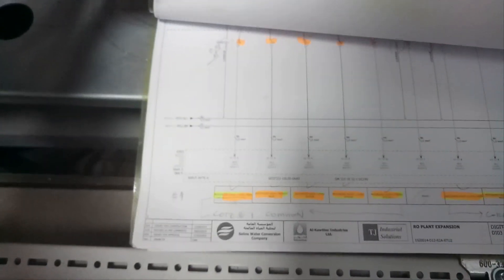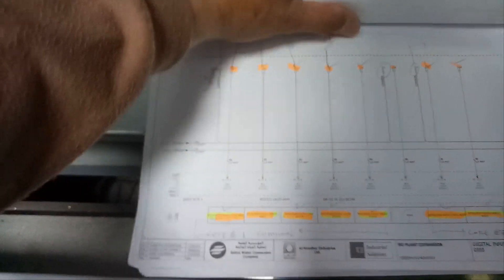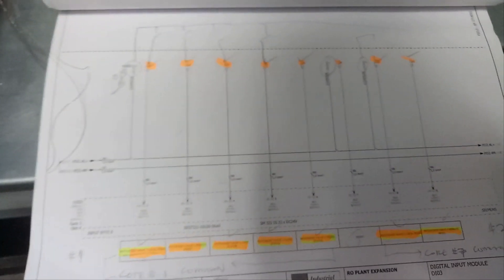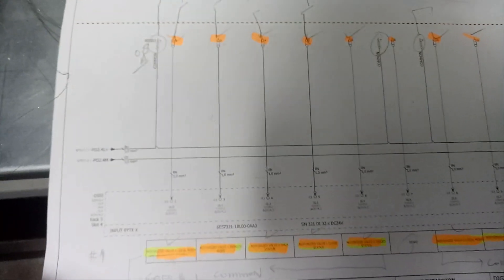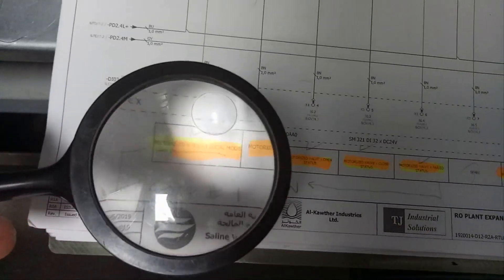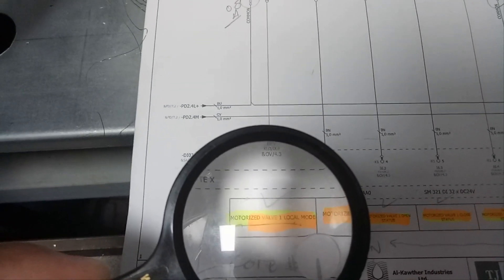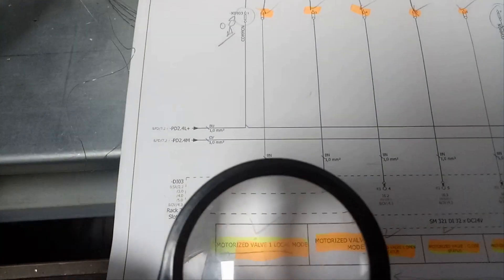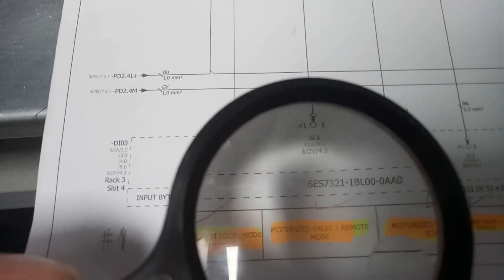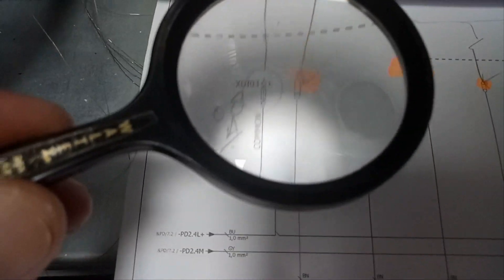Ito po yung motorized valve number 1. Gamitan natin itong magnifying glass para maging malinaw. So ito po yung motorized valve number 1 natin — 1-17 at manual mode. Dito po ay makikita po natin kung saan nakakonekta yung 1-17 para po sa motorized operated valve na normally open na dry contact. So ito po yung PLC signal module po natin — ito yung termination point. So dito po ang nakalagay sa PLC ay local mode — ibig sabihin po ng local mode ay manual mode din po siya. At ang auto mode naman po ang nakalagay dito sa drawing ng PLC ay remote mode. So base po rito, ang local mode ay connected po siya sa module na DI03 — digital input 03 nitong PLC. Ito po yung terminal point po niya.